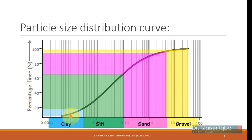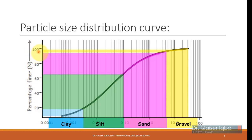If you plotted this on a normal scale, to give equal weightage to 0.001 and 0.002 and then 1 and 2, you would require an infinitely long horizontal axis — maybe 1 or 2 kilometers — which would not be possible to display and use meaningfully. That is why we plot particle sizes on a log scale, and percentage finer on a normal scale since it has constant differences.